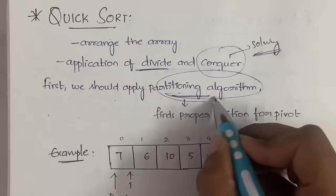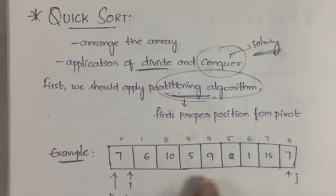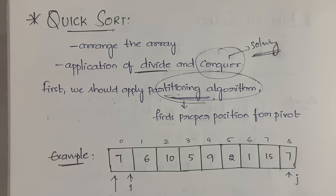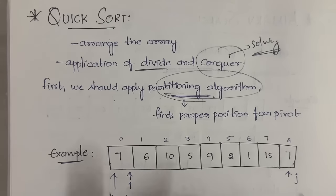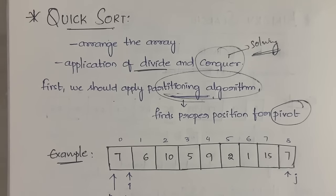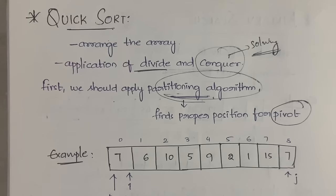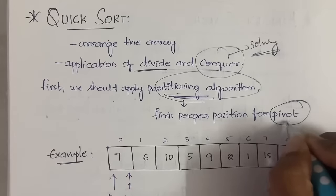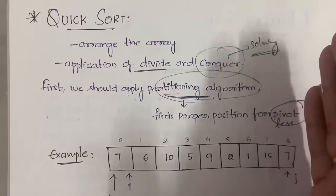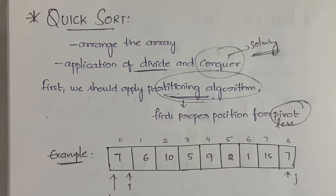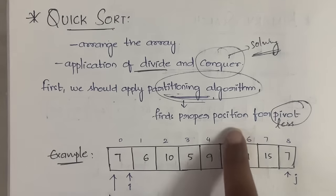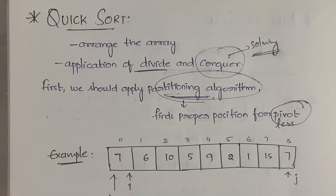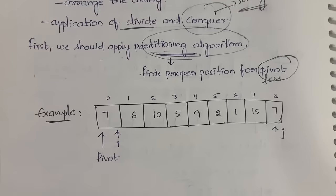First, what we have to do is apply the partition algorithm on the given array. You do not directly apply the QuickSort algorithm — first you have to apply the partition algorithm. After applying the partition algorithm, you will get the position for the pivot element. The pivot element is the key element, and depending on that, all elements less than the pivot will come to the left side and all elements greater than the pivot will come to the right side.